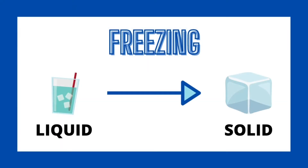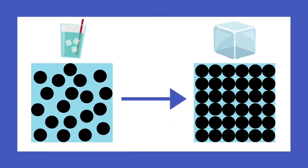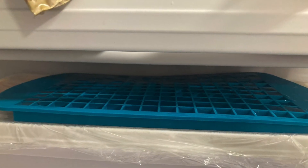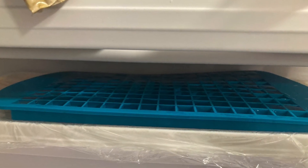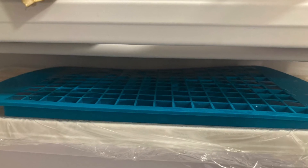The opposite of melting is freezing. Freezing is the phase change from a liquid to a solid. This process removes heat energy from a liquid, which slows down that liquid's molecules and turns it into a solid. Think about what happens when you fill a tray with water and place it into the freezer. After some time, the water in the tray will have frozen into ice cubes.